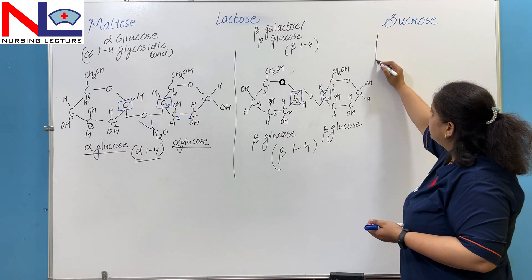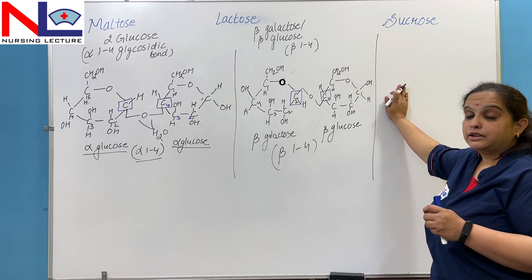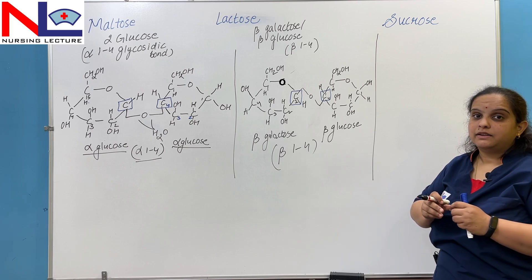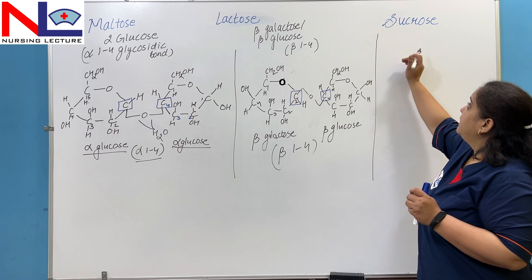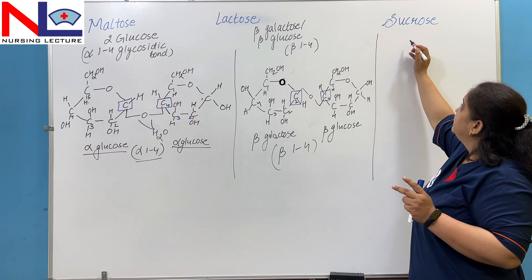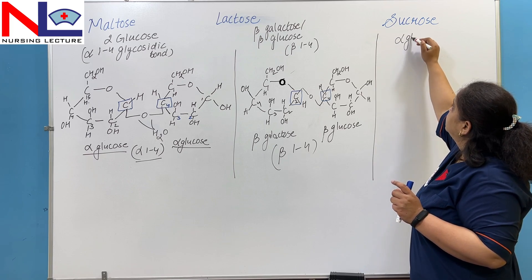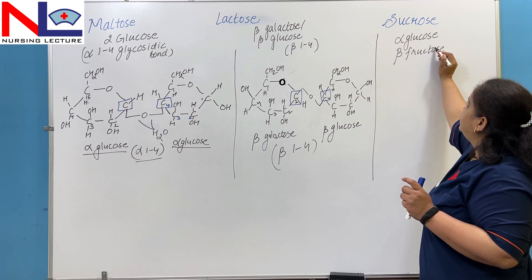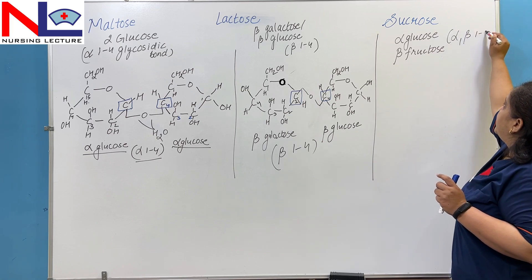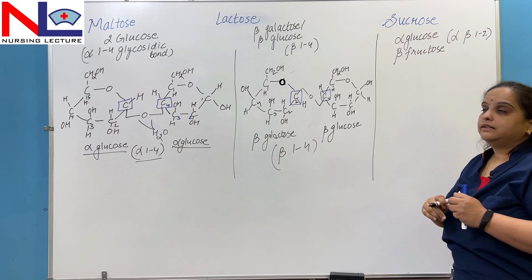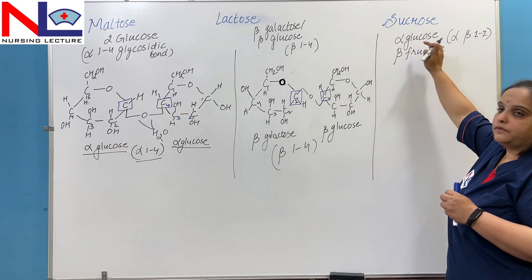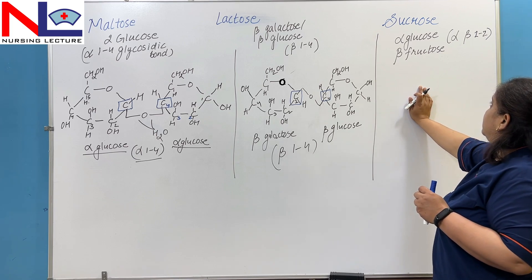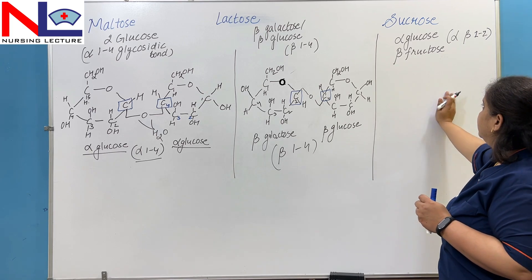The third example is sucrose. Sucrose is another disaccharide that is very rich in cane sugar, sugar beet, many fruits, some vegetables, and honey. It is a very sweet unit and is mainly composed of two different monosaccharides — one is alpha glucose and the other is beta fructose. The link is created between carbon-1 of alpha glucose and carbon-2 of beta fructose, forming an alpha-beta-1,2 glycosidic bond.